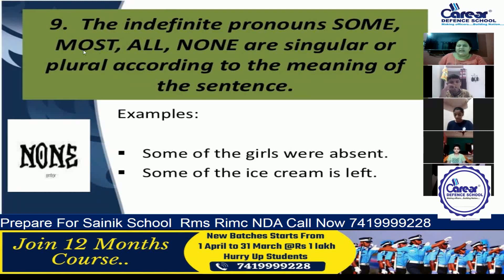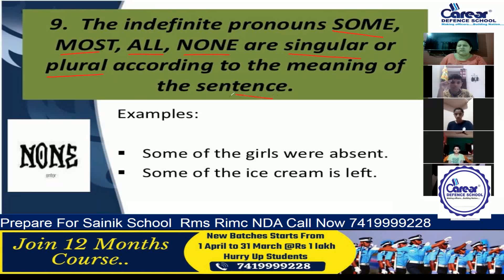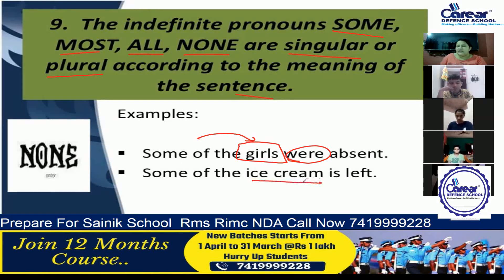The indefinite pronouns 'some', 'most', 'all', and 'none' can be either singular or plural — we use them according to the meaning of the sentence. For example: 'Some of the girls were absent' — girls is plural, so we use 'were'. But 'Some of the ice cream is left' — ice cream is singular, so we use 'is'. If the noun after 'some', 'all', or 'most' is plural, use plural helping verb; if singular, use singular helping verb.